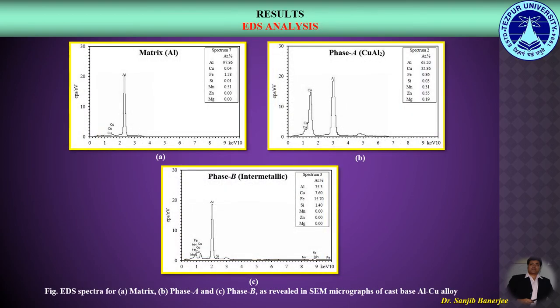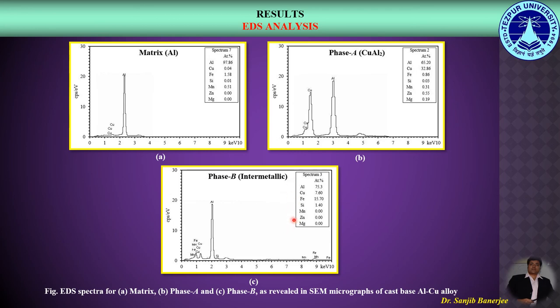EDS analysis was performed to detect the chemical composition of the matrix, phase A, and phase B as revealed in the optical micrographs of the cast base aluminum copper alloy. In the EDS spectra, we can observe that the matrix contained primarily aluminum, while phase A — the uniform phase along the grain boundary — is essentially the theta or CuAl₂ phase. Phase B, which exists as a script-like morphology along the grain boundary and triple points, is an intermetallic phase, as shown in these EDS spectra.